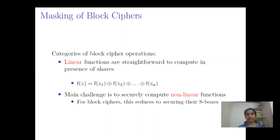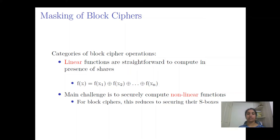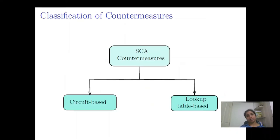We will see how to extend the masking technique to block ciphers. The operations in a block cipher are linear and nonlinear. Linear functions are trivial to implement — we can apply the function to individual shares. The nonlinear layer, which is the S-box for block ciphers, has to be handled carefully for a secure implementation. Approaches from the literature to implement the S-box can be broadly categorized into circuit-based and lookup table-based.